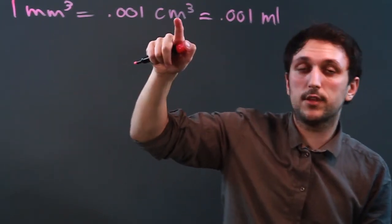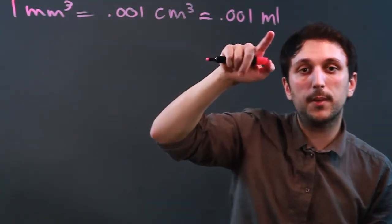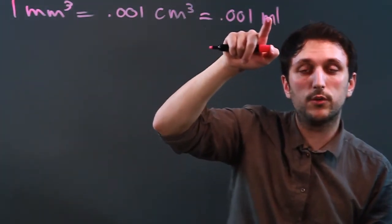Now, again, centimeters cubed is a distance measure, but since we're cubing it, we can make it volume. But in the metric system, we just have a unit of volume, which is a milliliter.